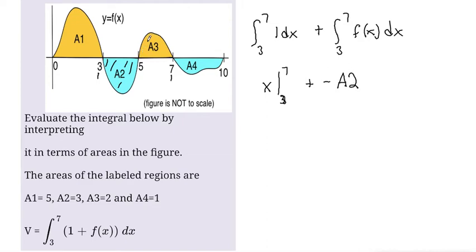And then we also take the area of A3, but because it's above the curve, we're going to take it as a positive. And I'm only going between 3 and 7 again, because those are my limits of integration.